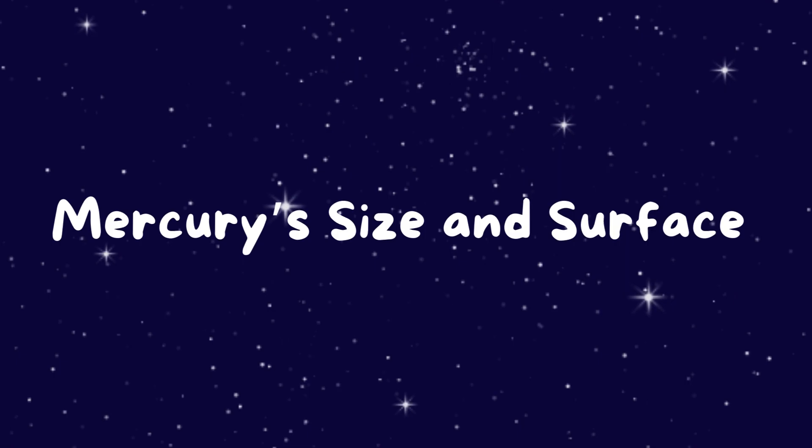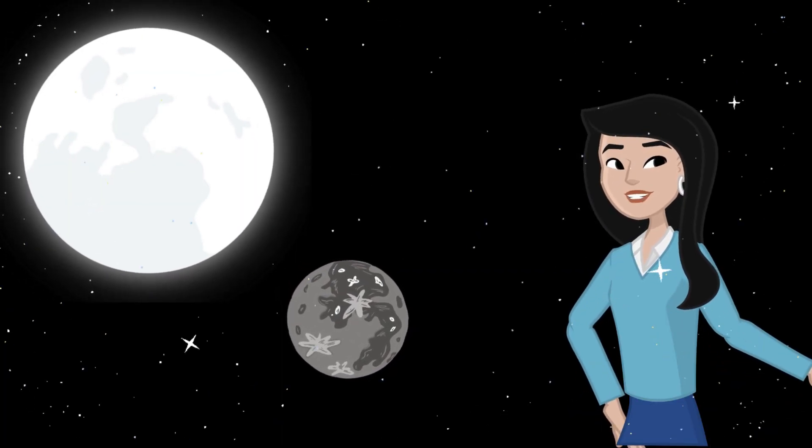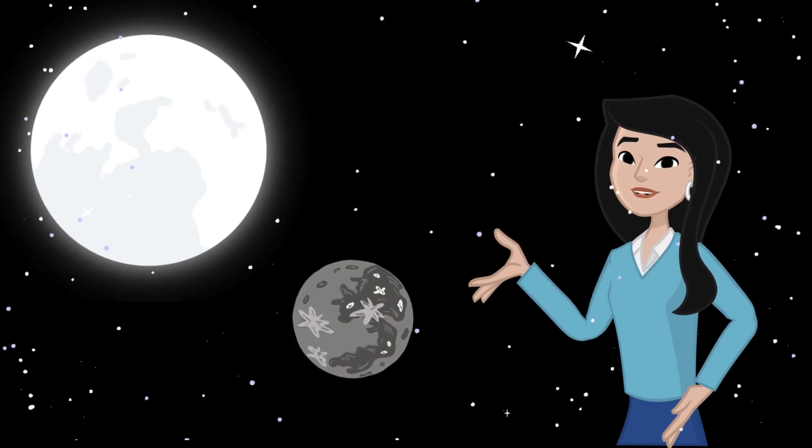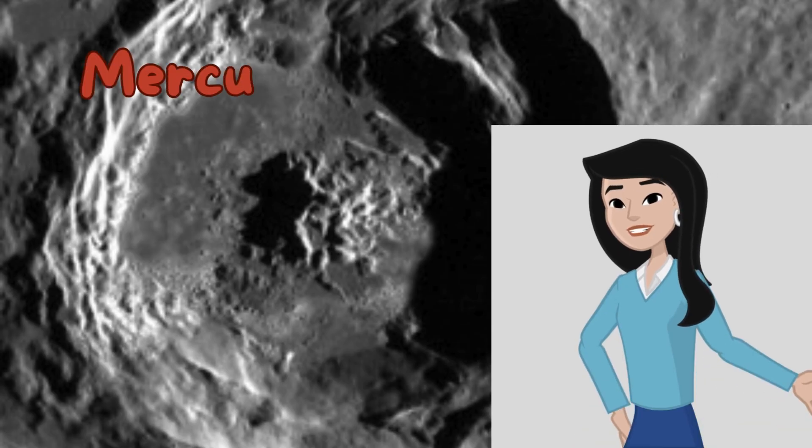Mercury is small but mighty. It's even tinier than Earth's moon. Its surface is covered in craters like a celestial pockmarked cookie.